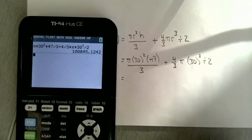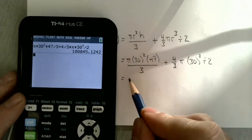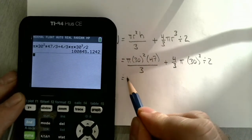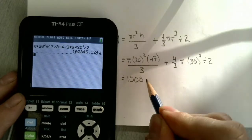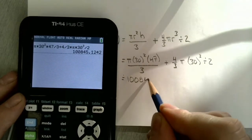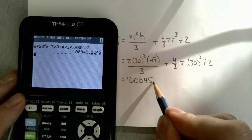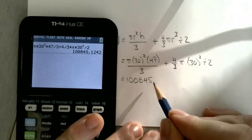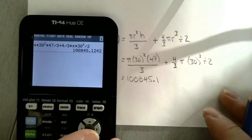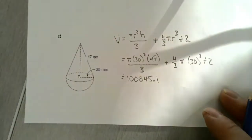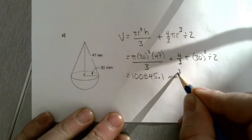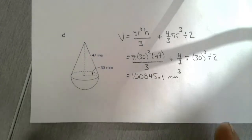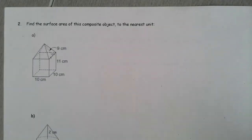That's going to be approximately 100,845.1 millimeters cubed. Now for the next three questions, we're going to focus on surface area. Surface area can be a little bit more difficult just because of the number of faces that you get when you put two shapes together.